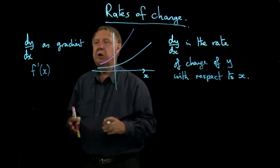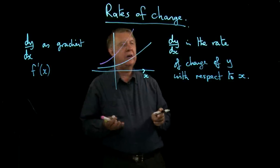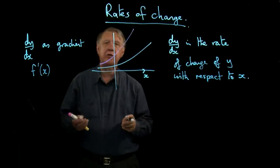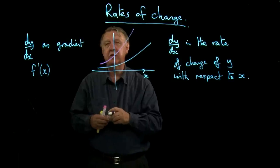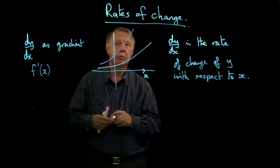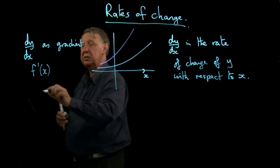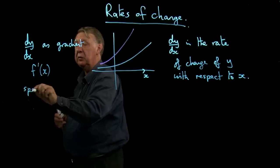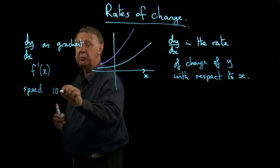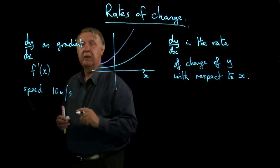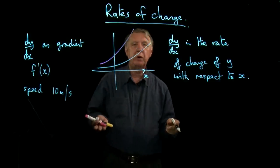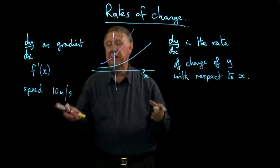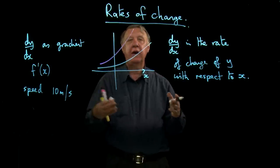Now, the word rate in ordinary life is probably much more likely to be associated with time. So we talk about a speed of 10 metres per second. That means that the rate at which I am travelling is 10 metres every second.